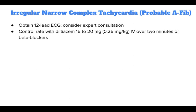For regular narrow complex tachycardia, or probable AFib, obtain a 12-lead ECG and consider expert consultation. Control the rate with diltiazem 15–20 mg, or 0.5 mg per kg IV over 2 minutes, or beta blockers.